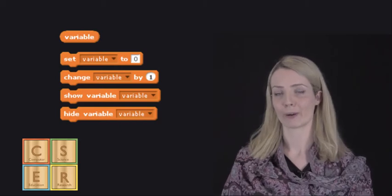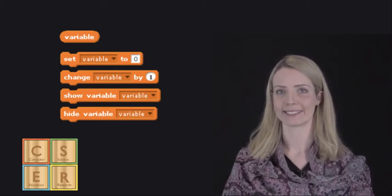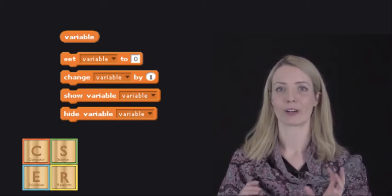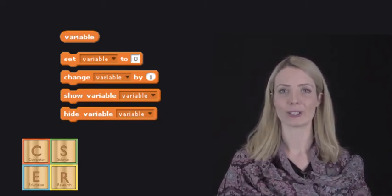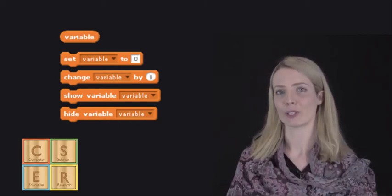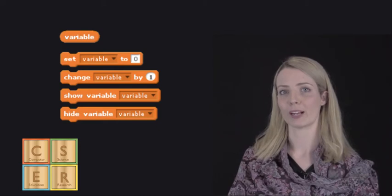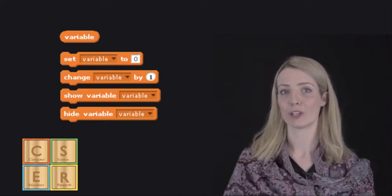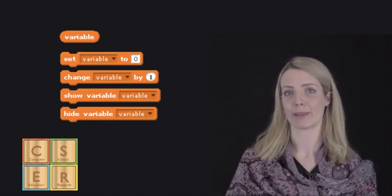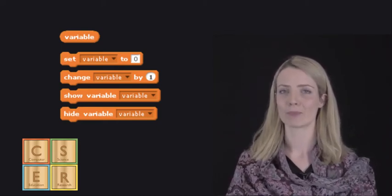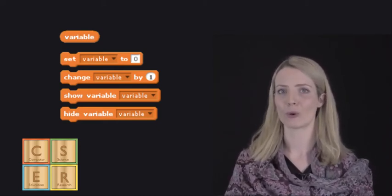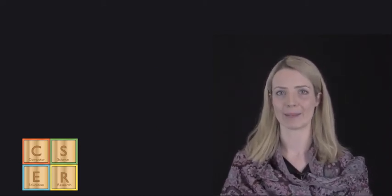We use variables to make our code smarter. When we're creating code, we can refer to our variable as a way to refer to that information being held, such as a score or a character name.